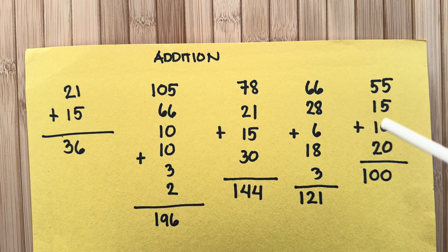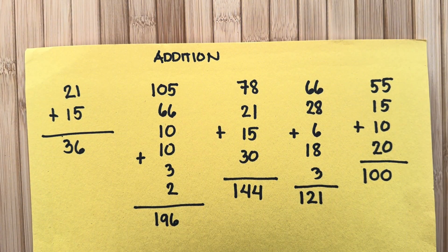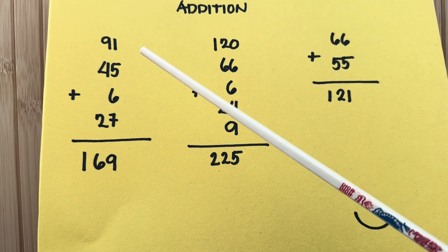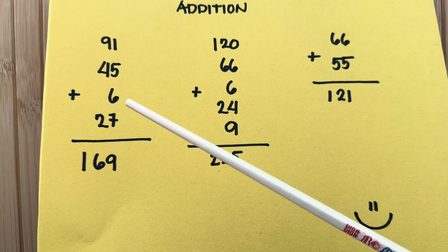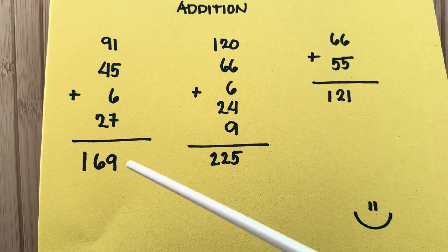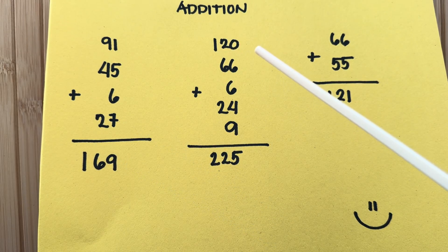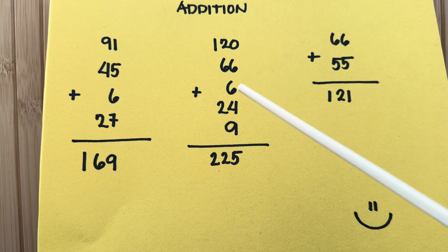55 plus 15 plus 10 plus 20 is equals to 100. Here's another example. 91 plus 45 plus 6 plus 6 plus 27 is equals to 169.